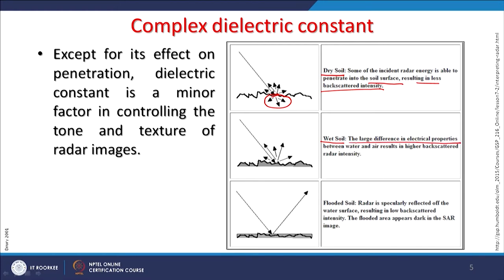The large difference in electrical properties between water and air results in higher backscattered radar intensity. SAR images are intensity images — backscattered intensity images. Darker signatures indicate low intensity, possibly due to absorption of microwave energy, while very bright signatures indicate high reflection due to high dielectric constant or high moisture content.